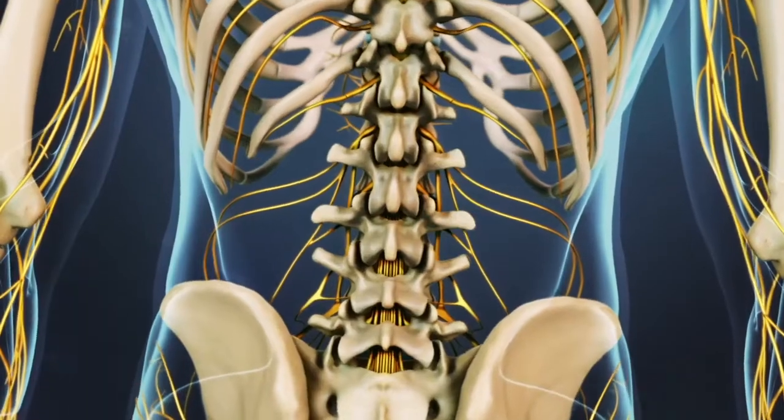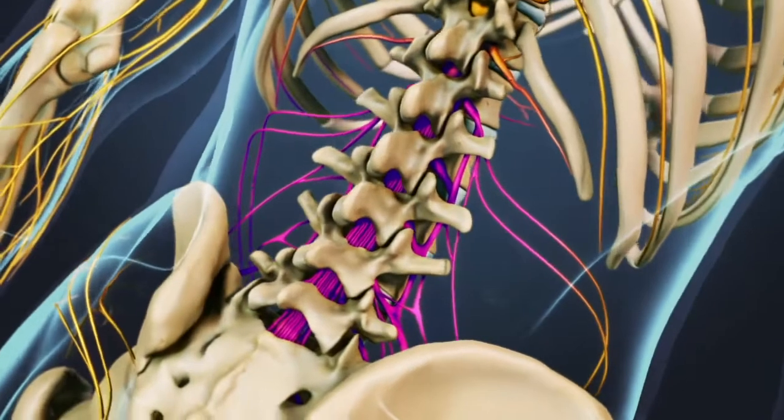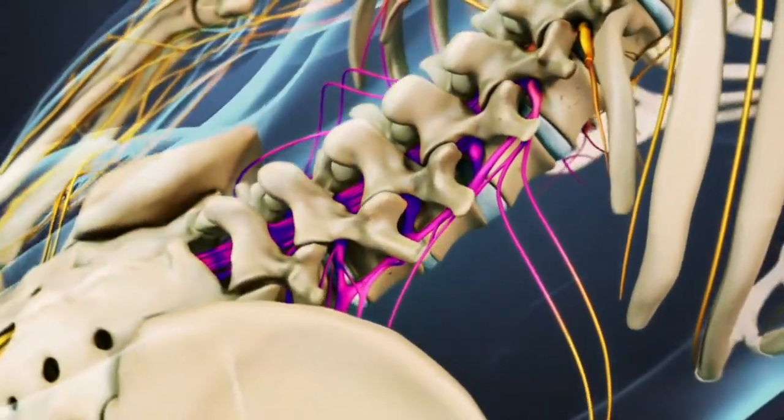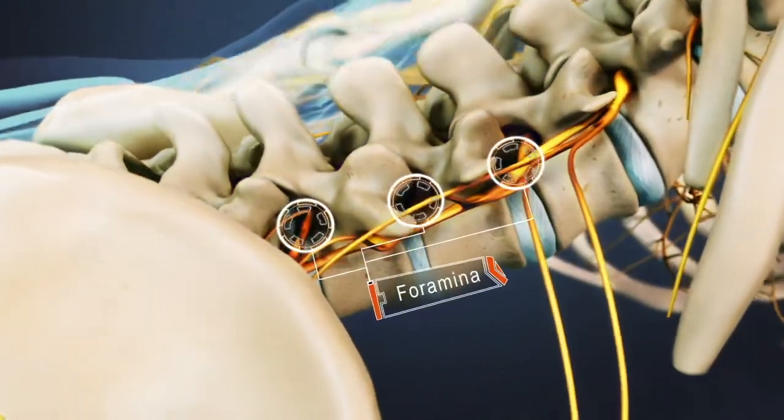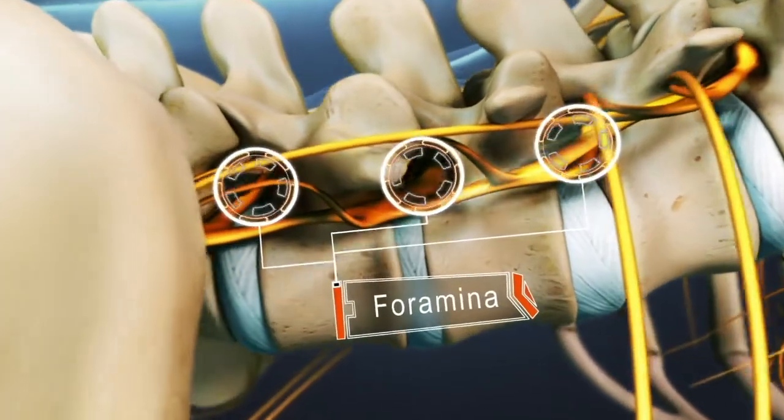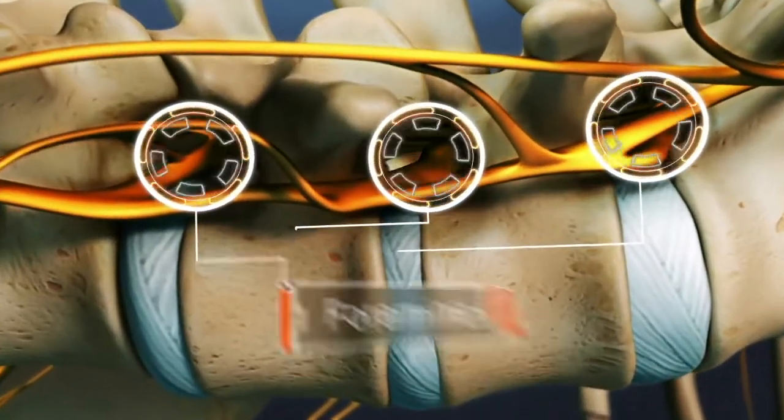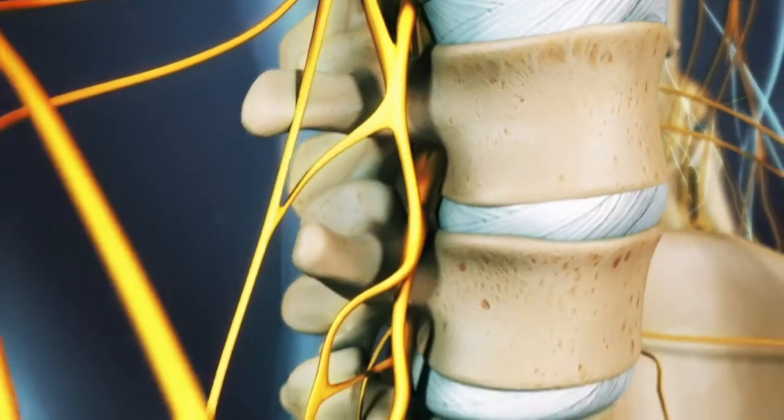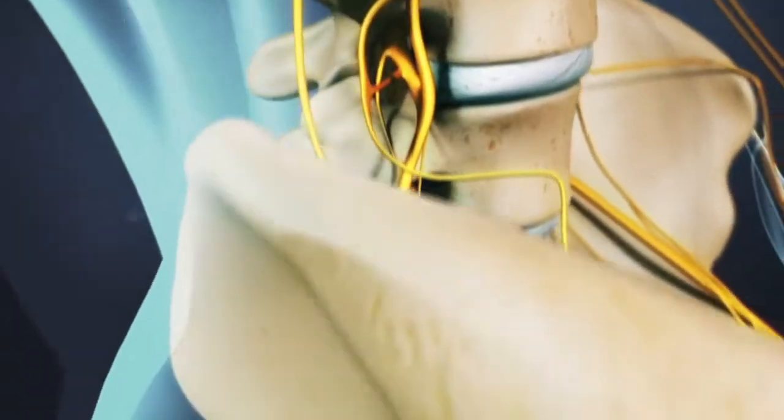The sciatic nerve starts as a collection of nerve fibers in the lower spine. These nerve fibers, or roots, exit the spinal canal through a number of openings in the bones at each level of the lower spine, called foramina. These lumbar nerve roots then combine to form one large nerve.